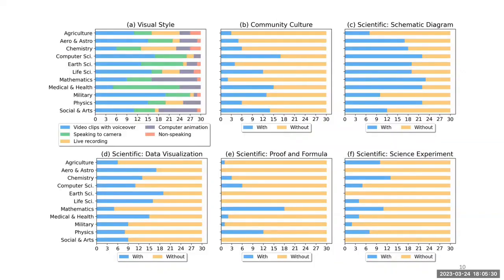These results revealed great diversities of strategy preferences among different topics. For example, considering the visual style, communicators of videos in the medical science and health care topic — the most popular topic — tend to sit in front of a camera and speak to their audience directly. But for videos in computer science and military science, more than half of the communicators do not show themselves, but only present by voiceover with several video clips, most of which are captured from external sources and manipulated to serve the video content.